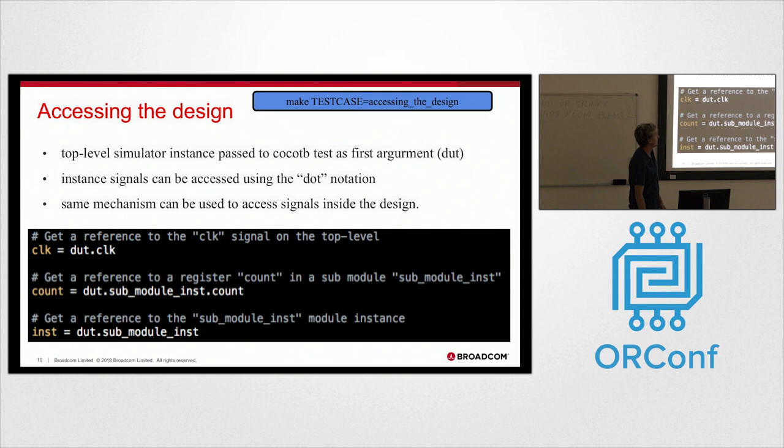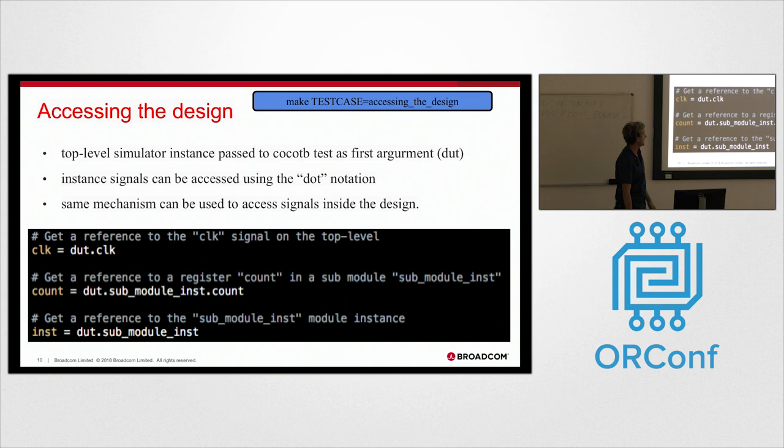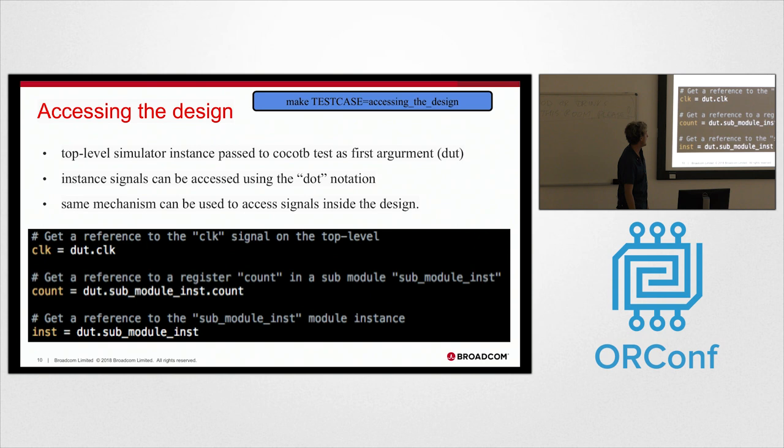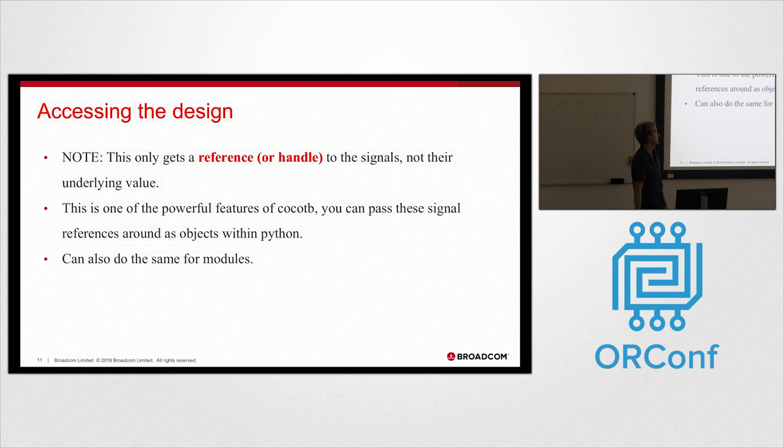So how do I actually get access to signals in the simulator? You use this dot notation here. From the argument in the previous slide, you've got a clock input. This clock variable here has now got a reference to that signal in the simulator. You can dig down into the hierarchy. The other cool thing is you can also get references to modules. One difference here is you're actually getting references to signals here, not the underlying value. For me this is one of the really powerful things about CocoTB, because you can pass around these references as objects within Python. You can do the same for modules, which is pretty awesome. If, for example, I'm interested in all AXI interfaces going into or out of a module, I can create a little function that will automatically crawl over a module and look for AXI interfaces and automatically hook up monitors, which is pretty powerful.